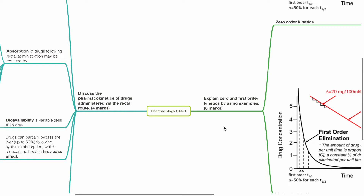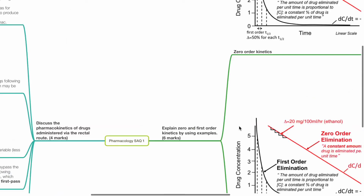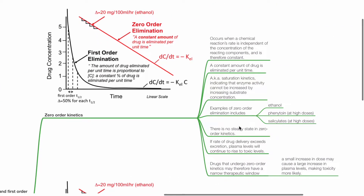Pharmacology SAQ 1: Explain zero-order and first-order kinetics by using examples (6 marks). Zero-order kinetics occurs when a chemical reaction's rate is independent of the concentration of the reacting components and is therefore constant. A constant amount of drug is eliminated per unit time. It is also known as saturation kinetics, indicating that enzyme activity cannot be increased by increasing substrate concentration.